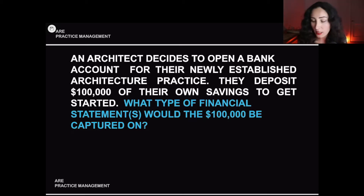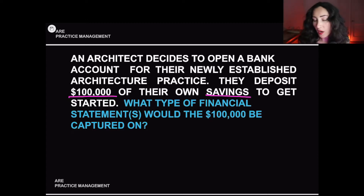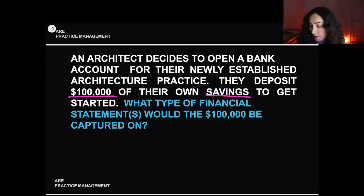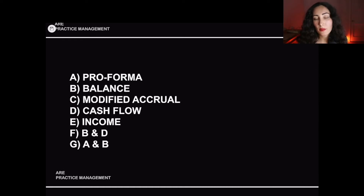Part one: an architect decides to open a bank account for their newly established architecture practice. They deposit $100,000 of their own savings to get started. What type of financial statement would the $100,000 be captured on? The $100,000 is a key piece of information. The question is asking for what type of financial statement — there might be more than one answer. Let's analyze the problem one term at a time.